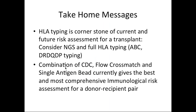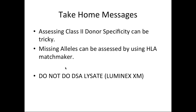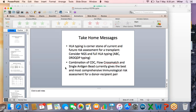Take-home messages: HLA typing is the cornerstone of current assessment, and we should start considering moving to NGS as well as full HLA typing for A, B, C, DQ, DR, and DP. A combination of CDC crossmatch, flow crossmatch, and single antigen bead is the current best and most comprehensive evaluation for the donor-recipient pair. Assessing class two donor specificity can be tricky. Missing alleles are present in about 20 to 30% of Indian donors, and the single antigen bead won't capture them — use HLA Matchmaker or similar software to assess. We should not be doing DSA lysate or Luminex crossmatch. Thank you, that's the talk and I'll be happy to take any questions.